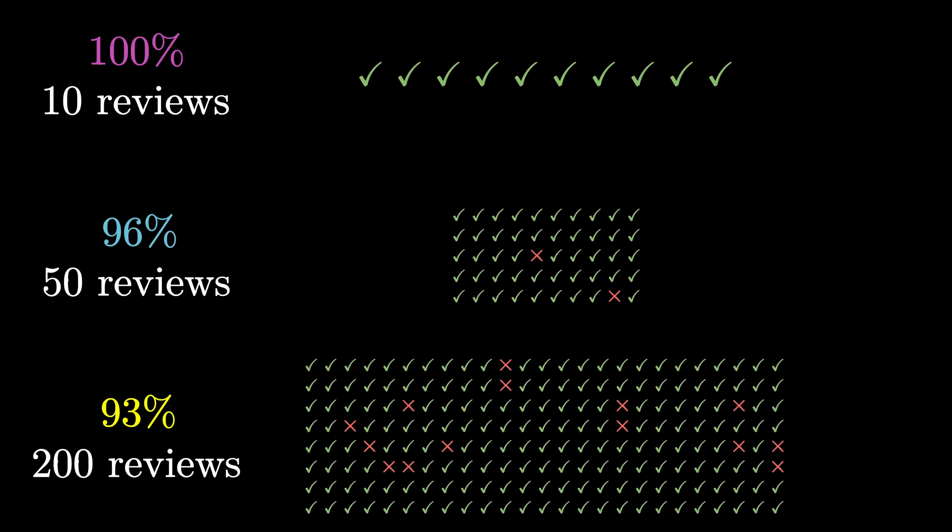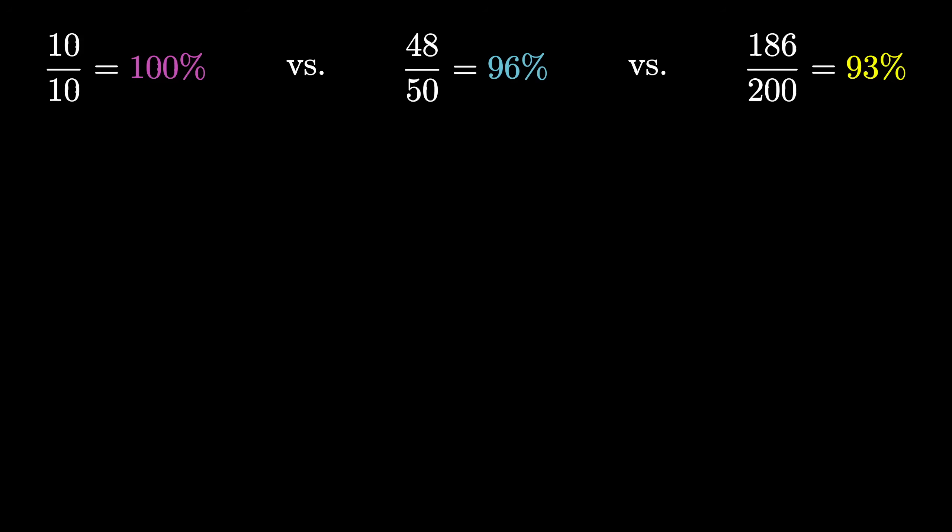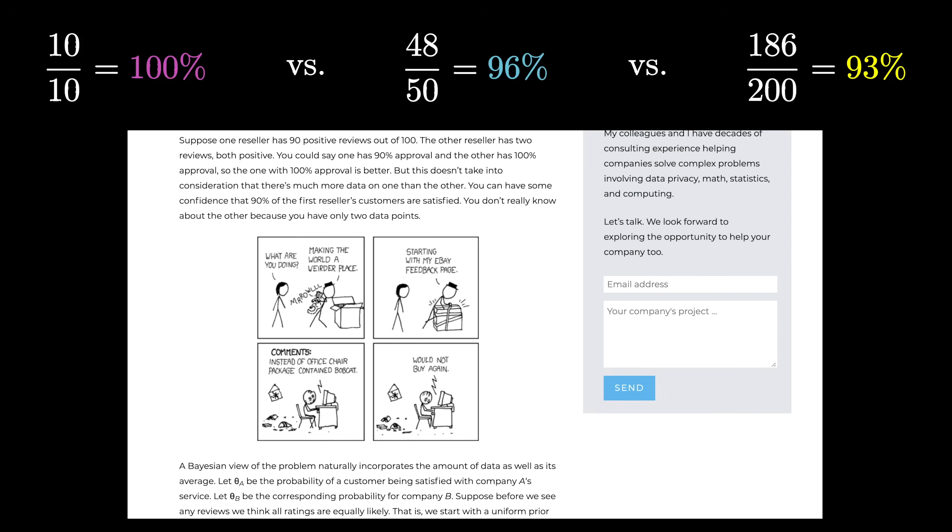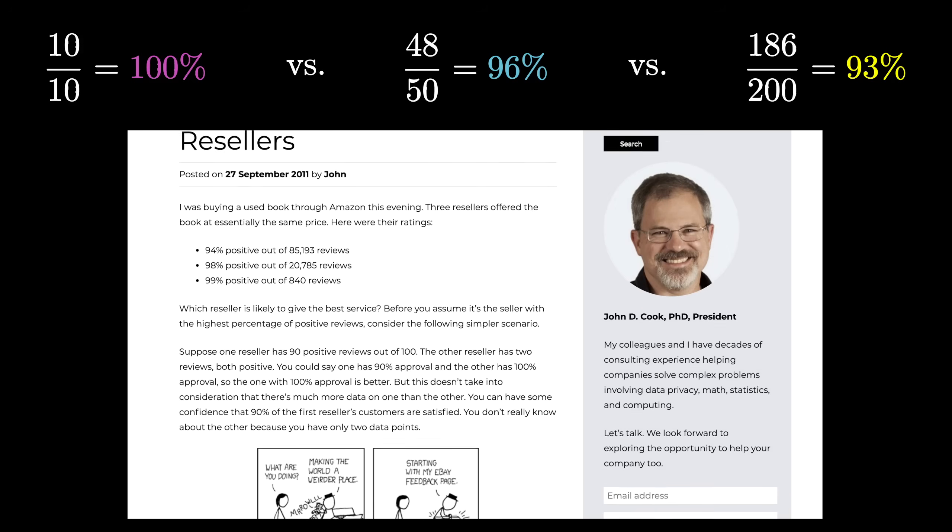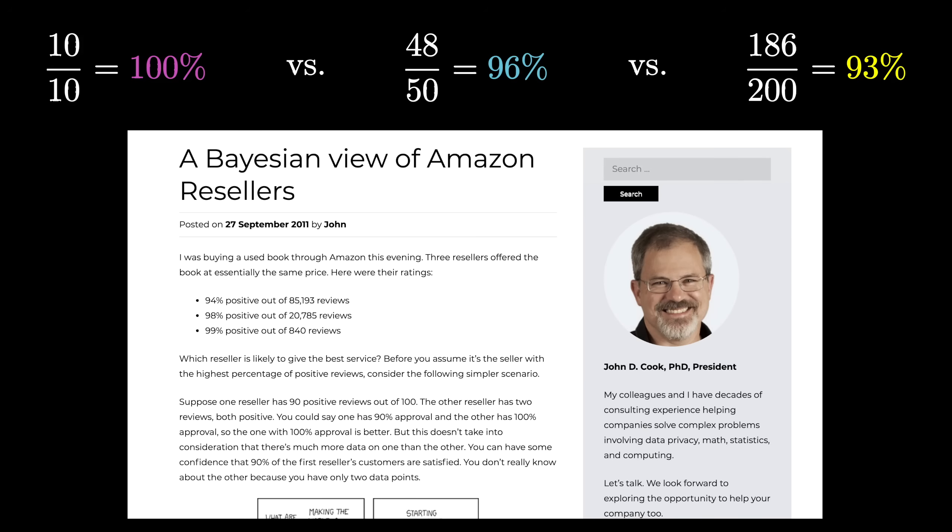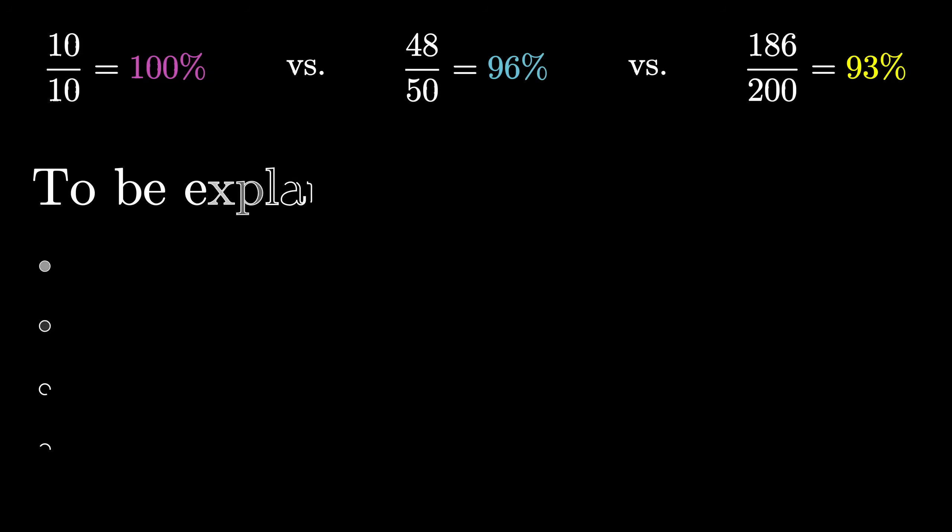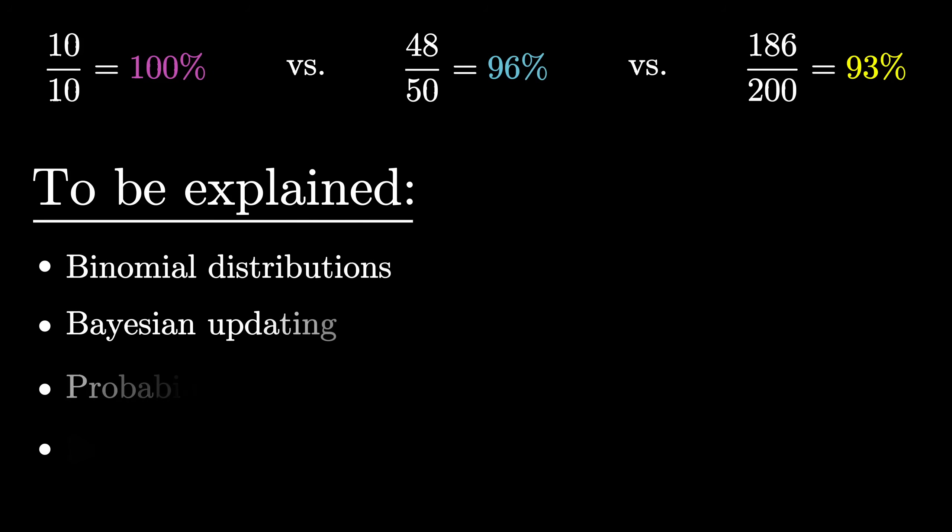But how do you make that intuition quantitative? What's the rational way to reason about the tradeoff here between the confidence gained from more data versus the lower absolute percentage? This particular example is a slight modification from one that John Cook gave in his excellent blog post, A Bayesian Review of Amazon Resellers. For you and me, it's a wonderful excuse to dig into a few core topics in probability and statistics.